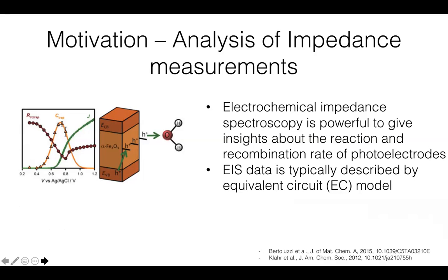For example, here on the left I show the extracted capacitance of the traps and charge transfer resistance of the traps as it was used in the study of Klar and Bisquert to extract the properties of the hematite photoelectrode.